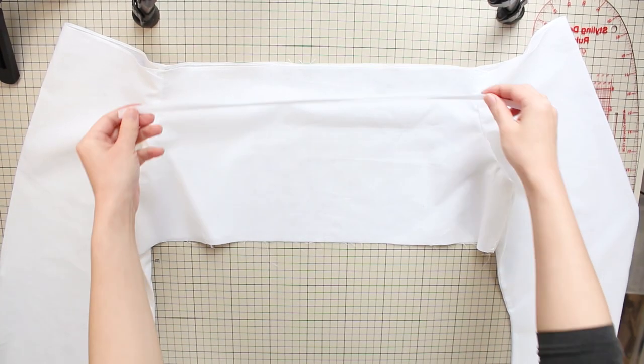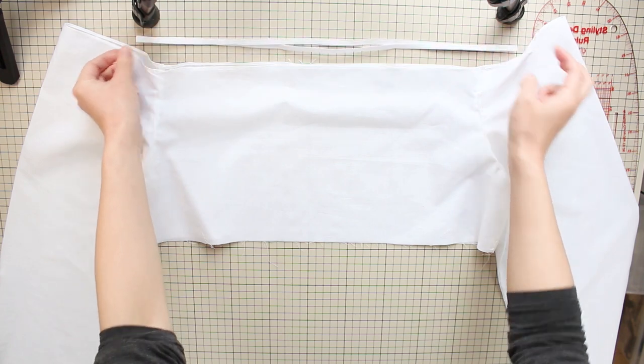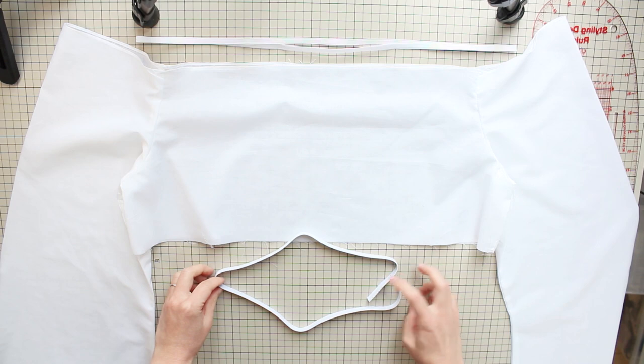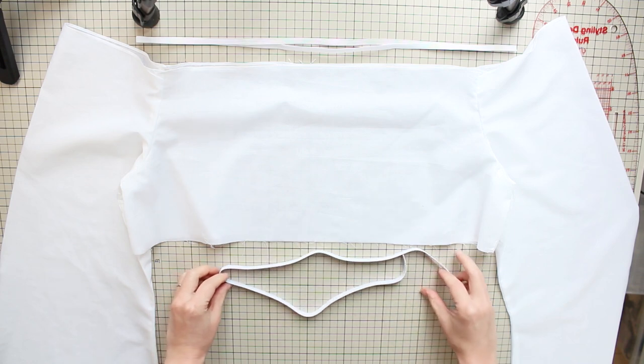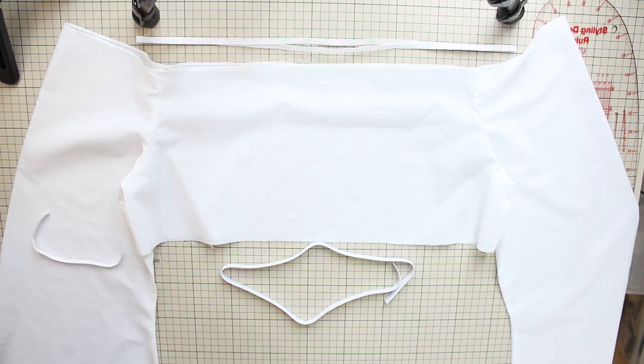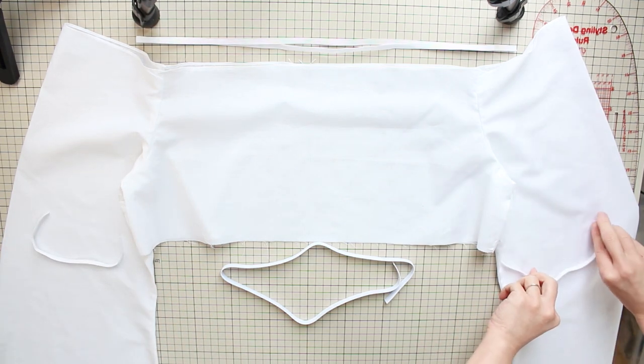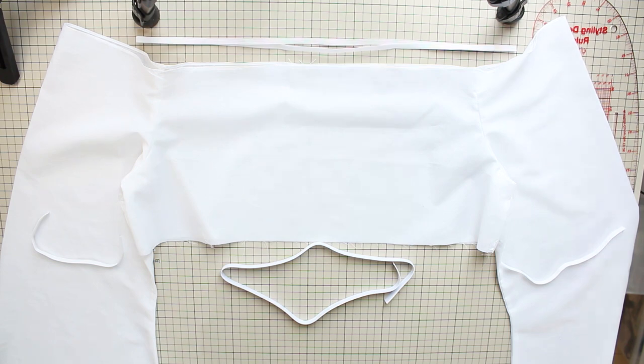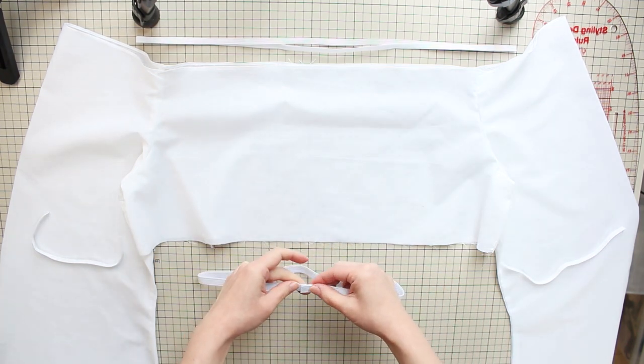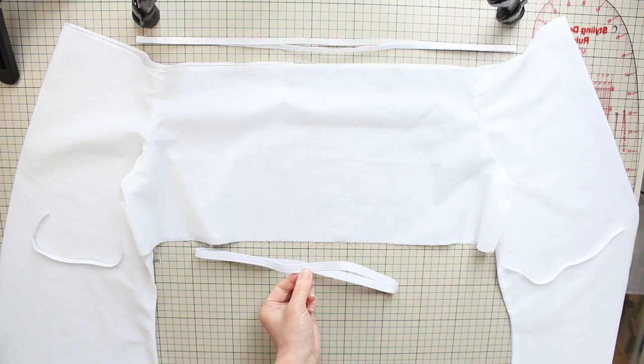Cut your elastic into a length that's nice and snug around your shoulders and another one that's snug around your underbust. I recommend you make this underbust one tight so that the top won't rise when you put it on. Also cut two pieces that are snug around your elbows. Stitch all of them at ends by overlapping the ends about 1 centimeter or 3 eighths of an inch.